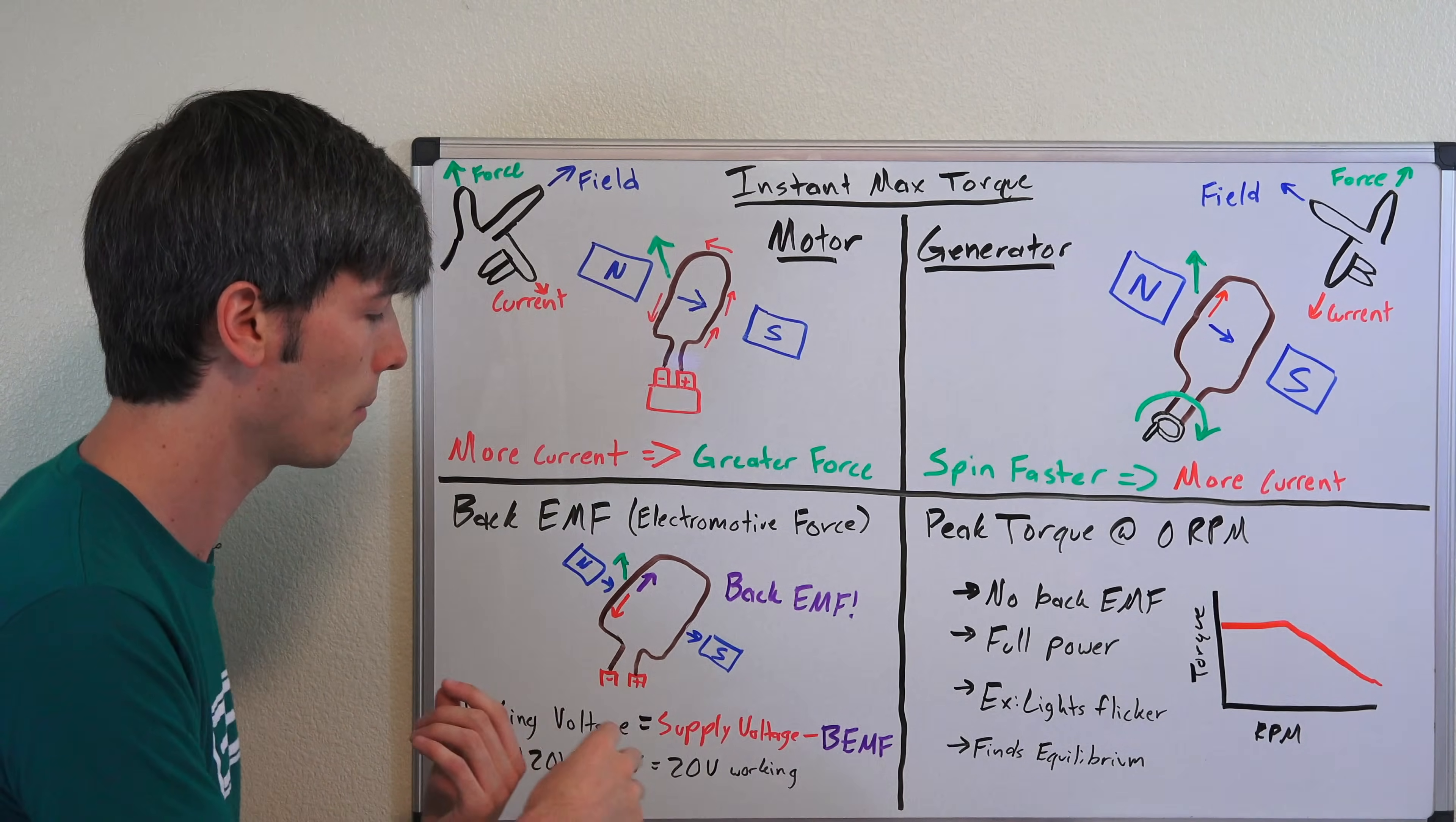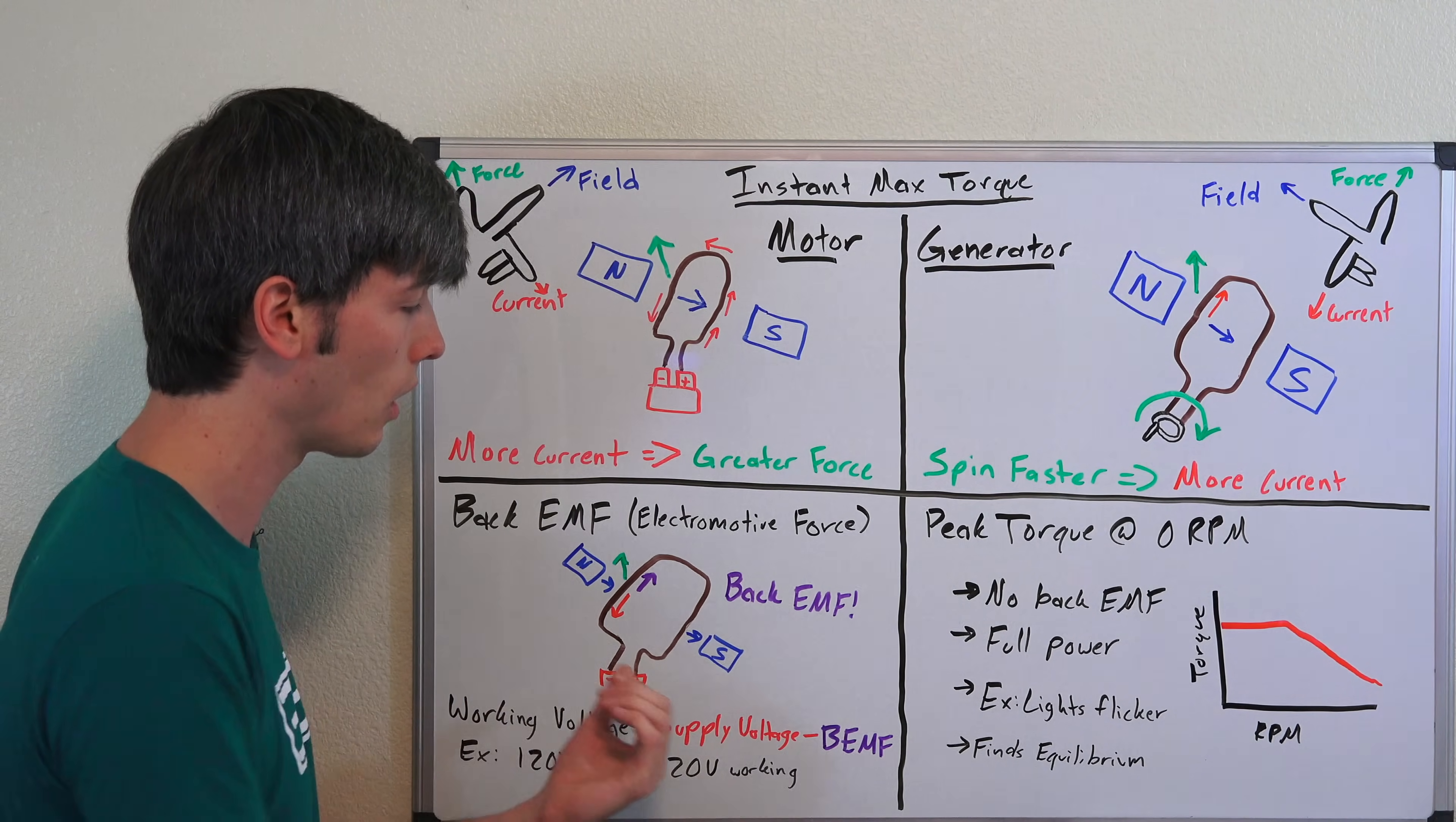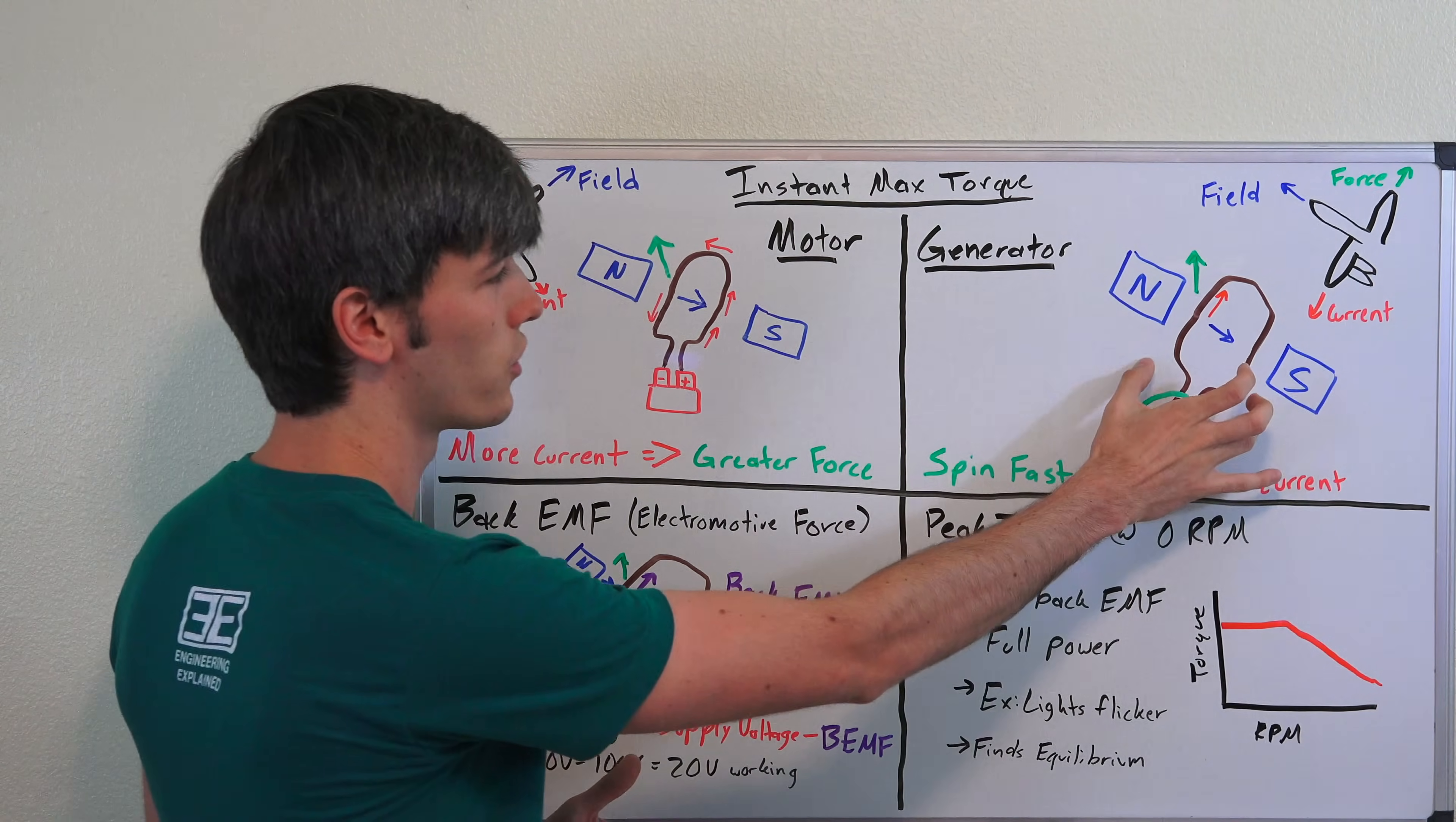Because you don't have any back EMF, you're not spinning it up yet, so you have a huge current draw to spin up that electric motor. Then once the electric motor is rotating, its actual working voltage is much lower as a result of the back EMF, and you see your lights very quickly come back to their normal levels.